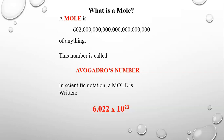This is called Avogadro's Number. In scientific notation, it's going to be 6.022 times 10 to the 23rd. By the way, we never really call it Avogadro's Number — you'll hardly ever hear that name used in class, but you will hear the word mole used every day, probably 10 times a class. We use that word to represent this number.